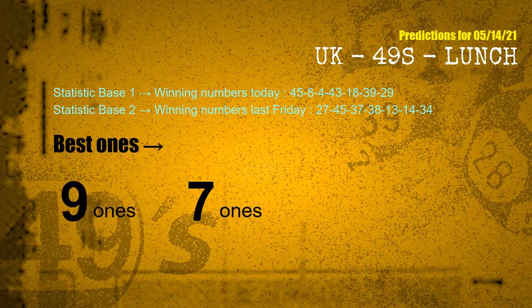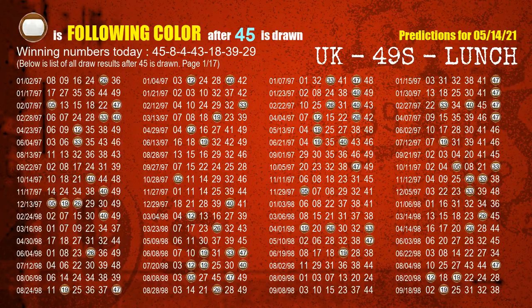According to the statistics above, with winning numbers today 45, 08, 04, 43, 18, 39, 29, and winning numbers last Friday 27, 45, 37, 38, 13, 14, 34 — the frequent following ones are 9 ones and 7 ones. Besides following ones, we need more clues for winning numbers of the next draw, so we will find out the most drawn ball color through today's result.